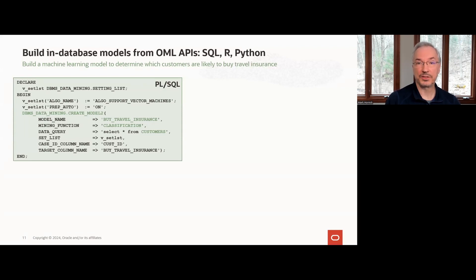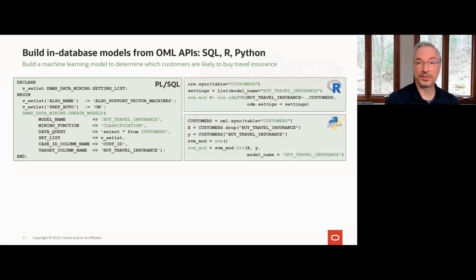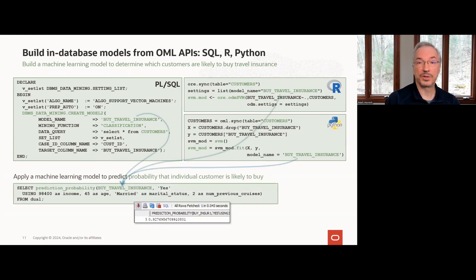The PL/SQL code on the left shows using the createModel2 function from the DBMS Data Mining package to build a model using the Support Vector Machine algorithm. You can build that same database model using R and Python functions from the Python and R interfaces. You can use such models to score an individual customer using the prediction probability operator in a SQL query — using the model name — and see that this customer is likely to buy insurance. This query could easily be invoked from ODBC, JDBC, APEX, or any other interface that enables SQL access to the database. And of course, you can score using the R and Python APIs as well.